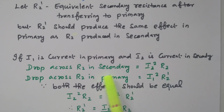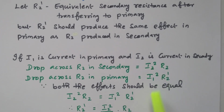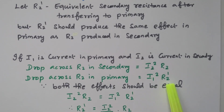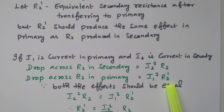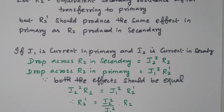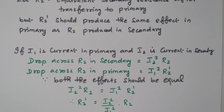The drop across R2 in the secondary is I2 squared into R2. The same drop across R2 referred to the primary is I1 squared into R2 dash, because while referring to the primary, R2 is referred as R2 dash and the current becomes I1. So I2 squared times R2 equals I1 squared times R2 dash — both effects are equal. These two are equal.